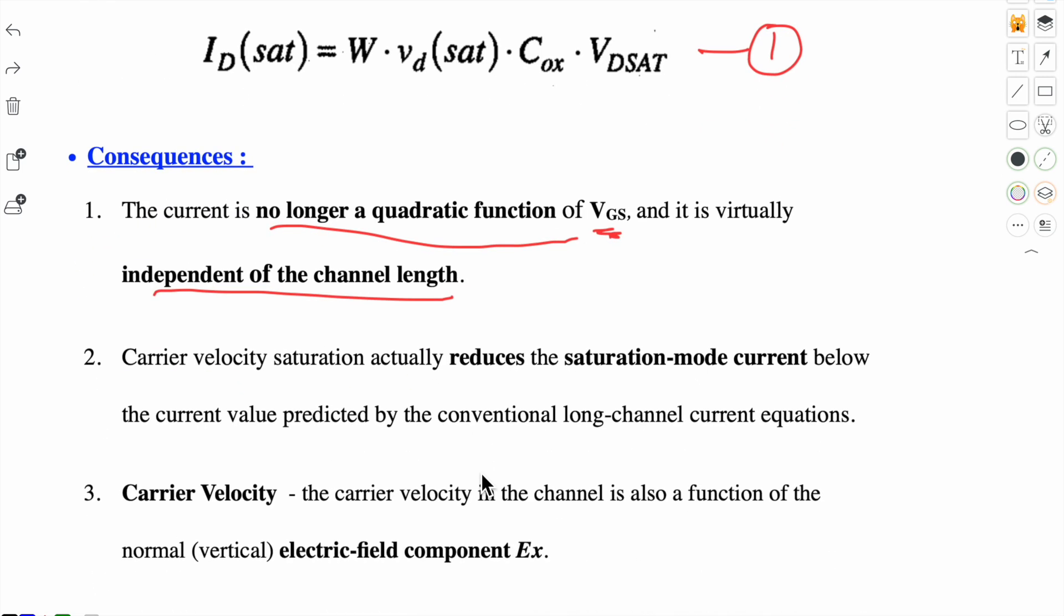Second, carrier velocity saturation actually reduces the saturation mode current below the current value predicted by the conventional long channel current equations. So the long channel current equations will give us a higher value of drain current compared to what we get due to this short channel effect.